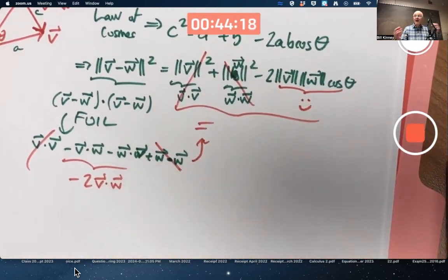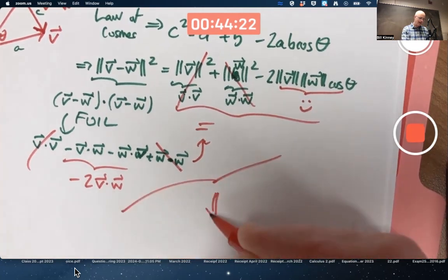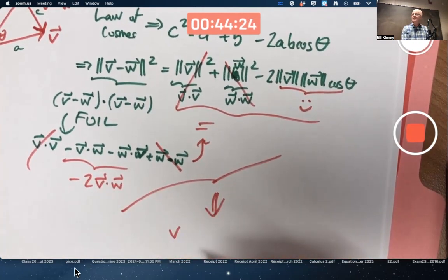Equals minus 2 times that. We're done. Divide both sides by negative 2.